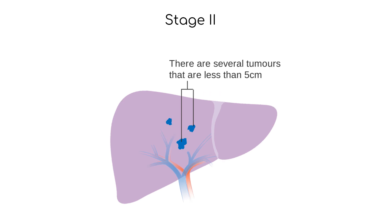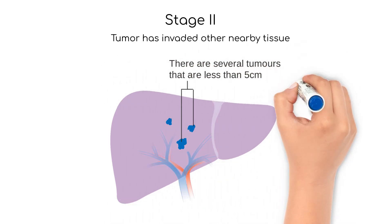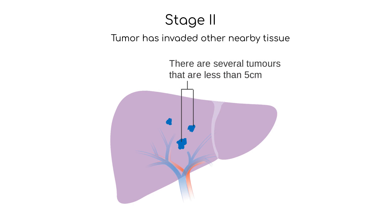Stage 2 is the next stage of cancer when the tumor has grown larger and may have started to invade nearby tissues. At this stage the cancer cells may also have spread to nearby lymph nodes but they have not yet spread to other parts of the body. Treatment for stage 2 cancer usually involves a combination of surgery, radiation therapy, and chemotherapy.